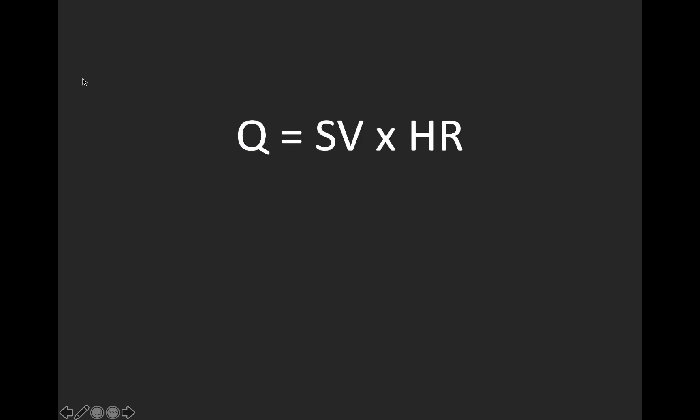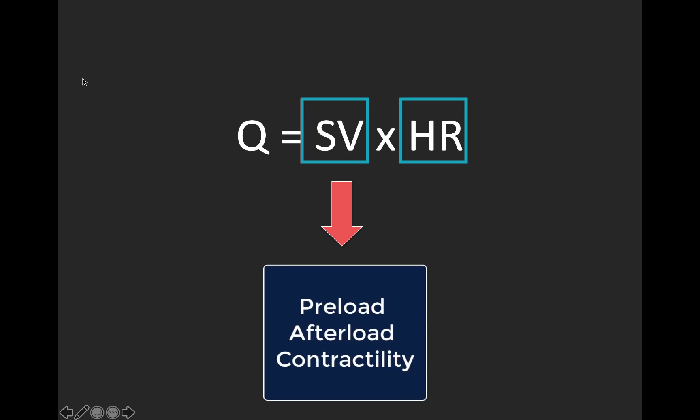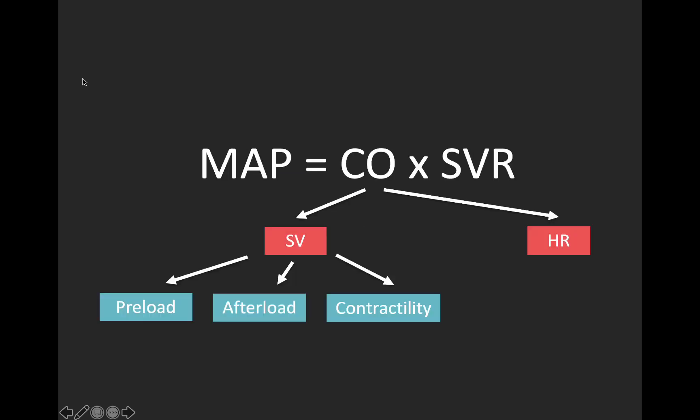So let's look at what determines cardiac output. Your cardiac output equals your stroke volume — how much blood is pumped out of the heart with each beat — times your heart rate. Things that affect stroke volume include preload, afterload, and contractility, or inotropy. When we think about patients in shock with a low mean arterial pressure, we want to think about which part of this equation is abnormal. MAP equals cardiac output times systemic vascular resistance, or SVR, and we can use this equation coupled with clinical and ultrasound data to figure out what type of shock is present and how to fix it.